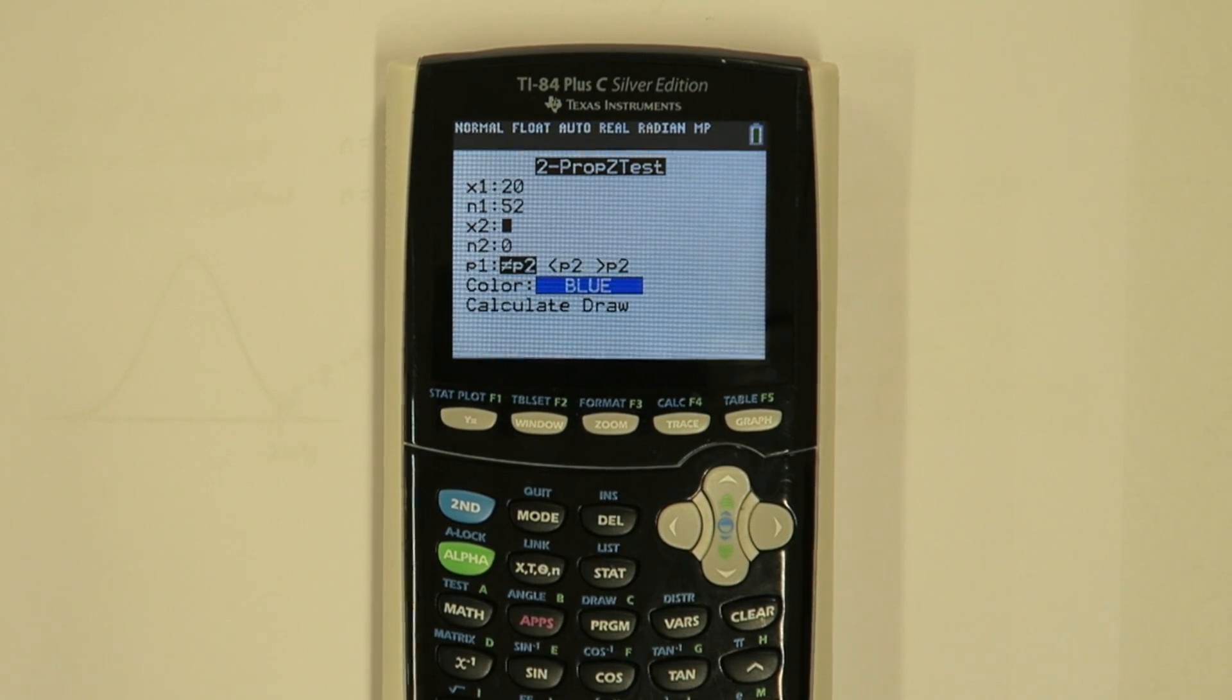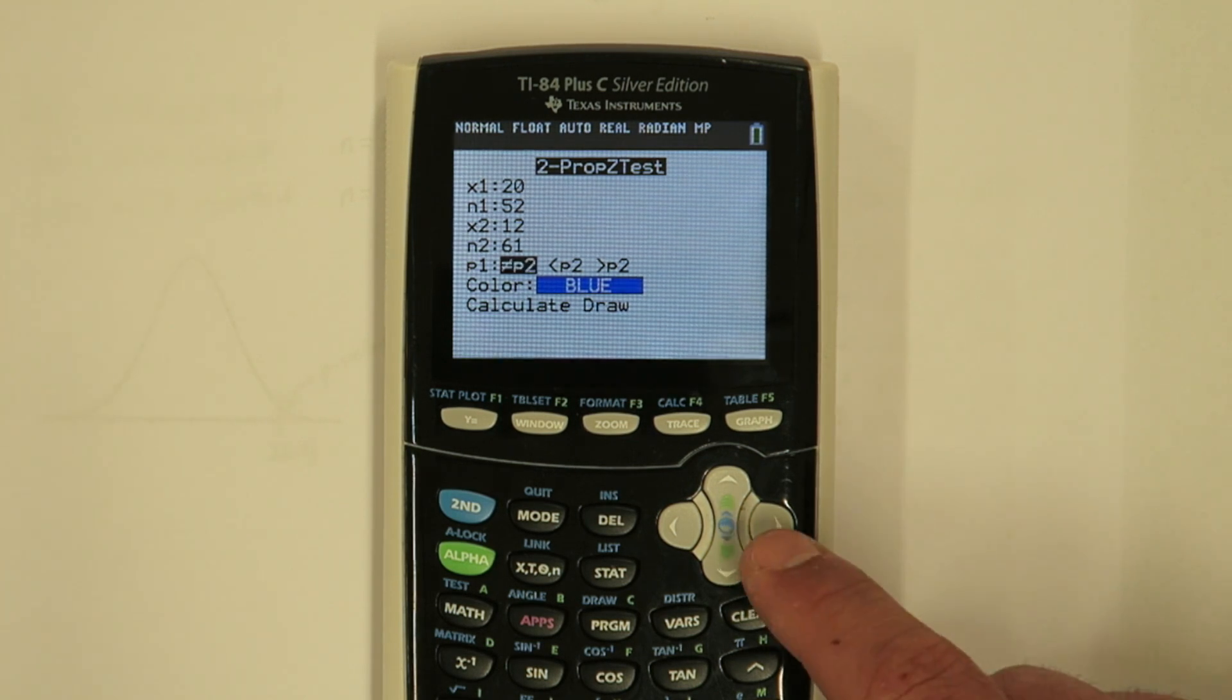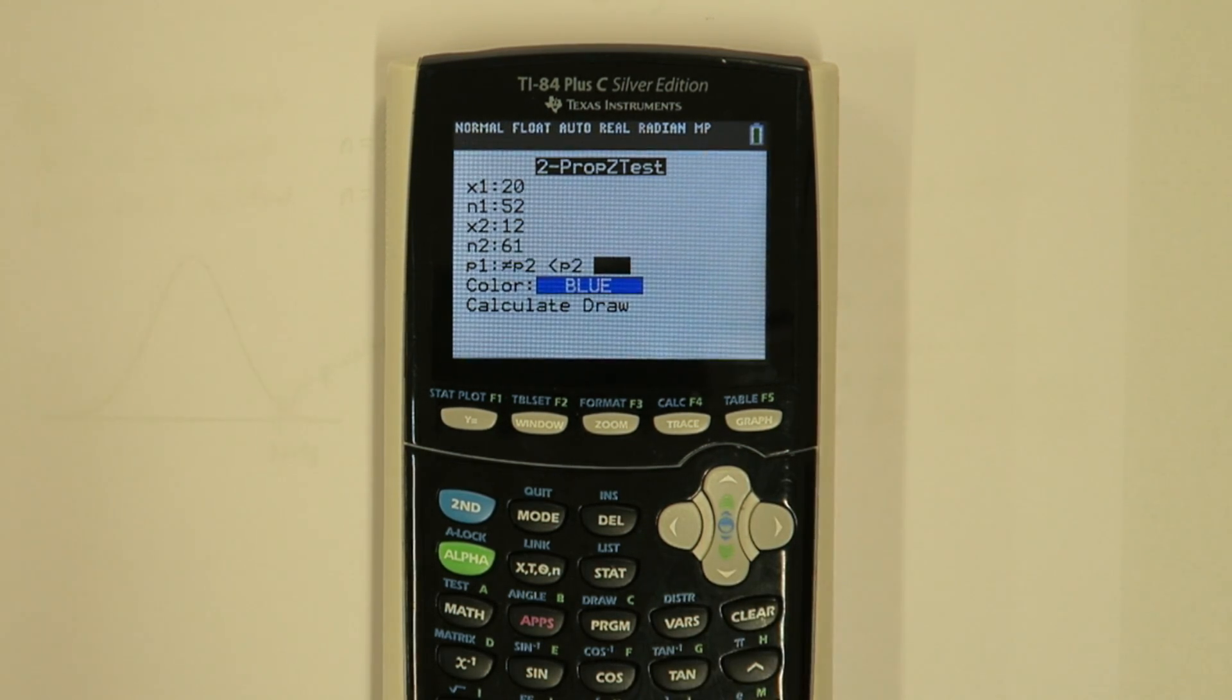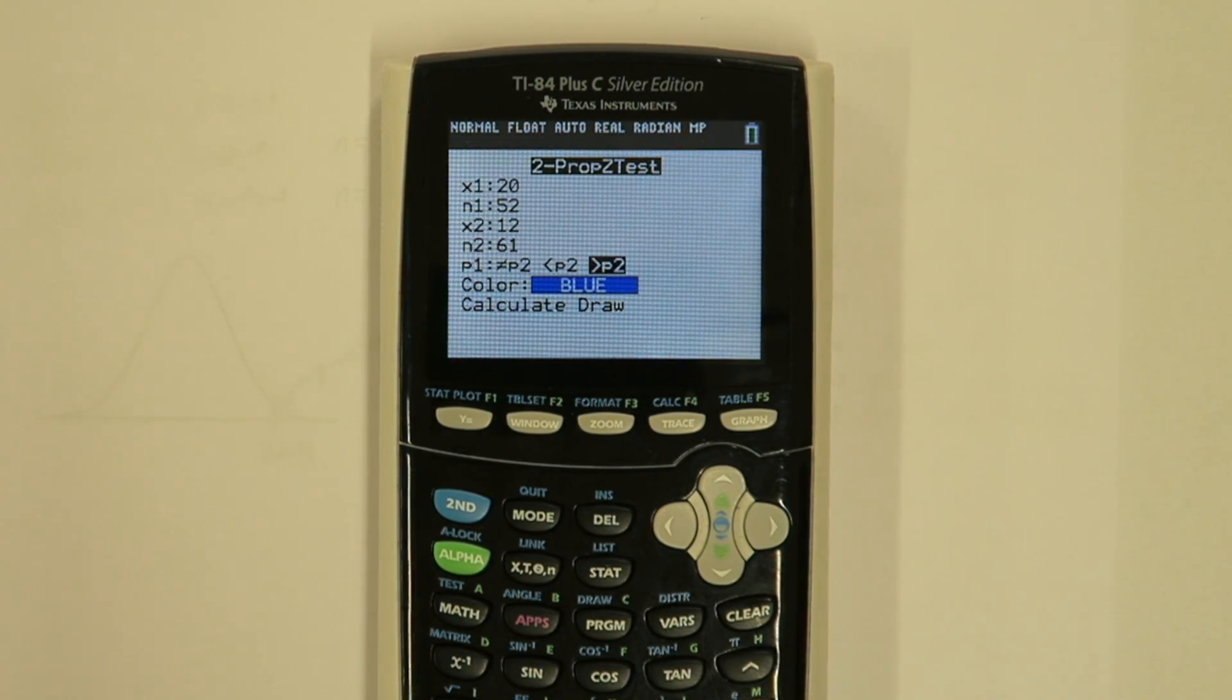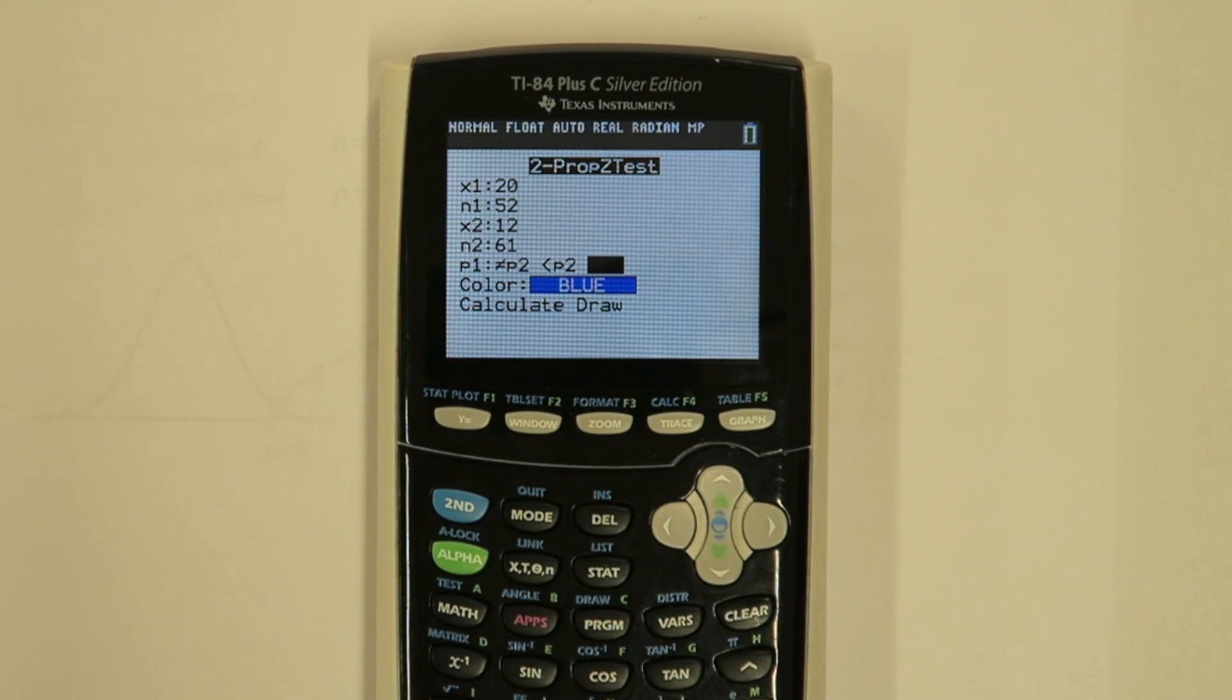For X2, put 12 and then 61 for the sample size in 2014. Our first proportion in this case is 2017. We're testing to see if that's greater than 2014, which is our second proportion.